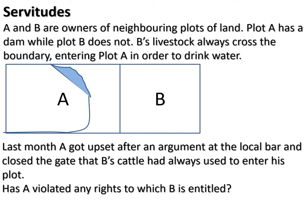B's livestock always cross the boundary fence, entering plot A in order to drink the water there. Last month, A got upset after an argument and closed the gate that B's cattle had always been using to enter Mr. A's plot. The question is: has A violated any rights to which B is entitled? In terms of the law of servitude, yes — the closure of the gate is a violation of the servitude rights that Mr. B enjoys in respect of Mr. A's property.